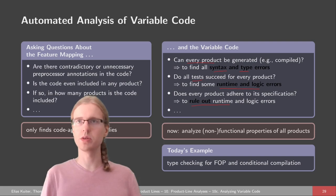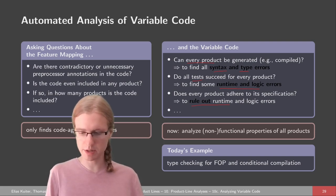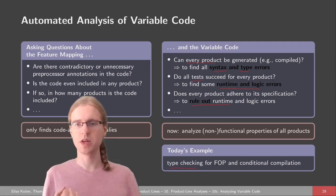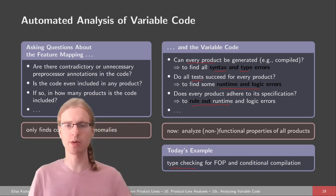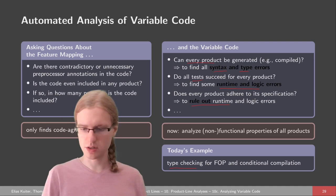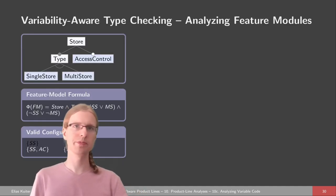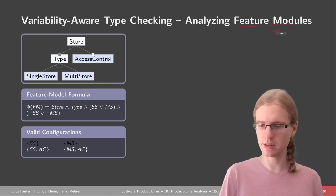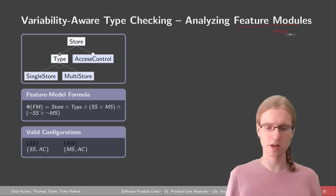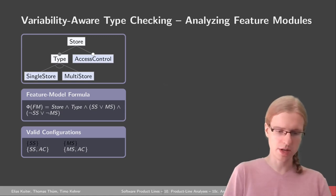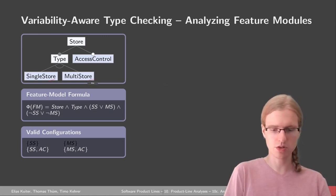What we're going to do now is try one example — namely type checking for feature-oriented programming and conditional compilation. We're giving hints at how such a type checker can be implemented, and the basic idea is to reduce the type checking problem to a satisfiability problem, which is often done in a family-based analysis. To get started, we analyze feature modules again. We're in feature-oriented programming and have a store with single store, multi-store, and access control.